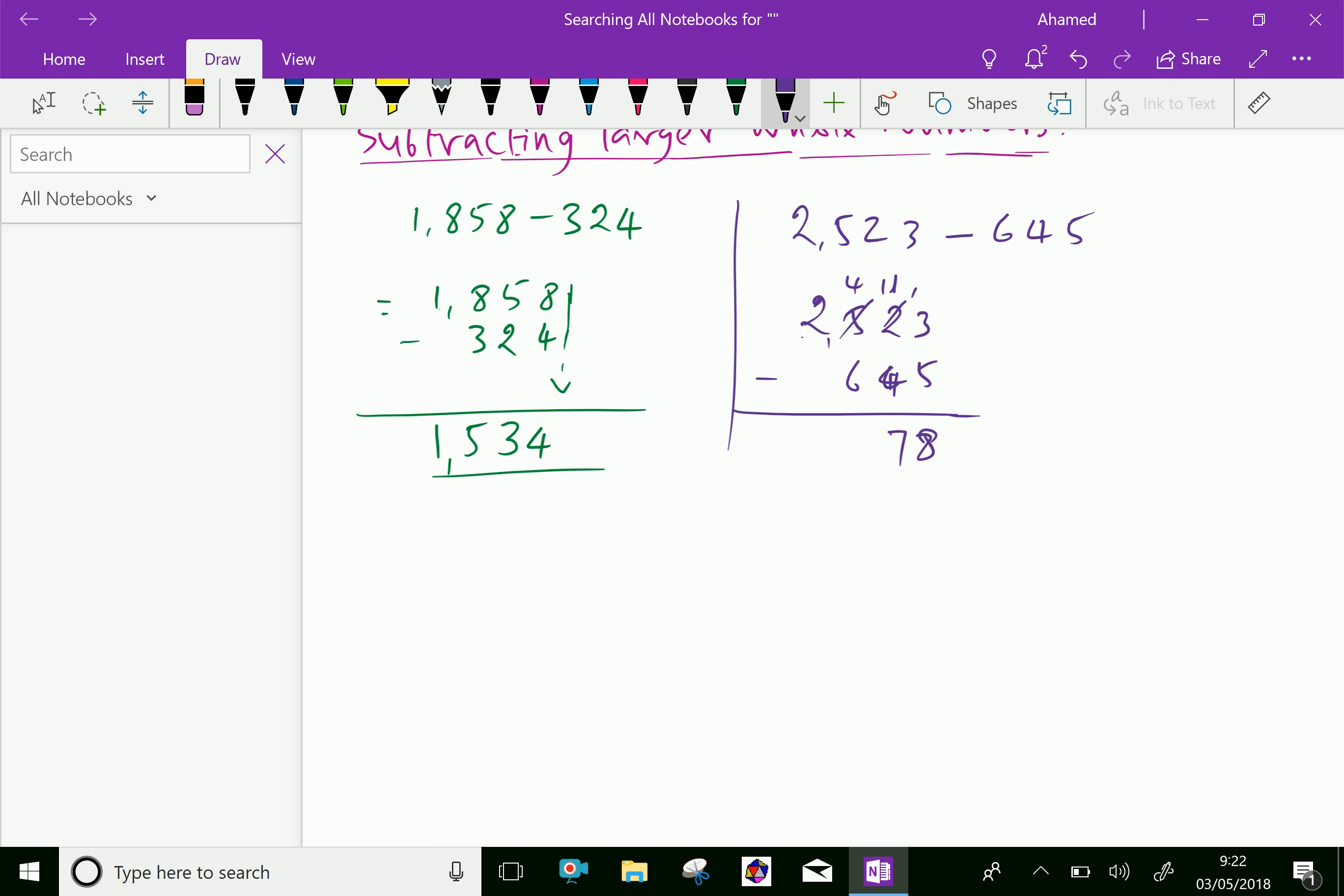For the third digit, you have to do 4 minus 6, which we cannot do, so get 1 from this 2. It becomes 1, and this becomes 14. Then 14 minus 6 is 8, and 1 as it is, so the answer is 1,878.